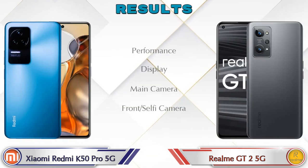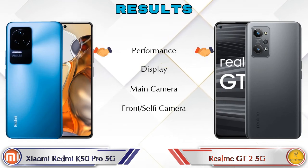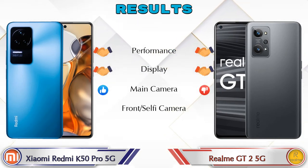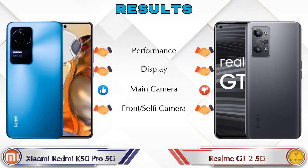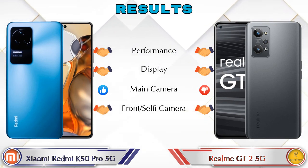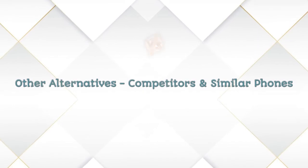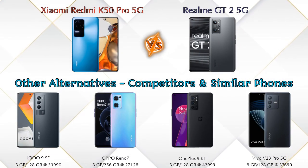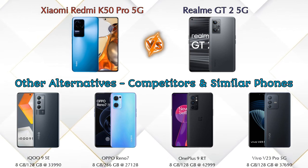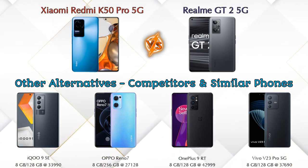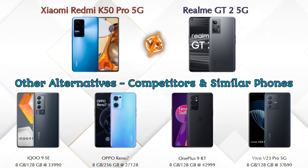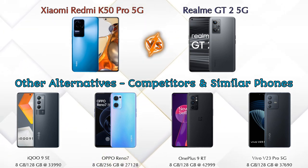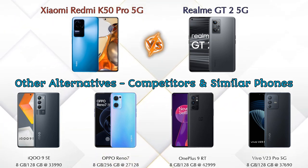Finally, talking about the result: in performance both phones are the same; in display both phones are the same; in the main camera the K50 Pro 5G is ahead; and in the front selfie camera both phones are the same. For other competitors at the same price segment, the first is iQOO 9 SE 5G, second is Oppo Reno 7 5G, third is OnePlus 9RT, and the last is Vivo V23 Pro 5G. Details about all these competitor phones are available in the description.